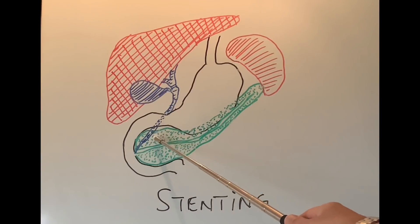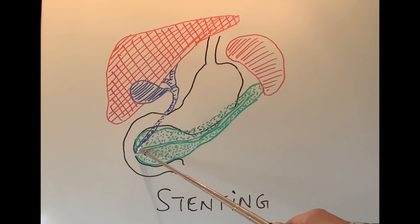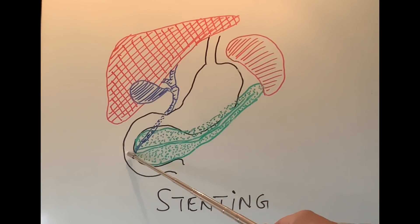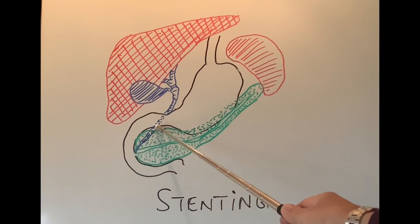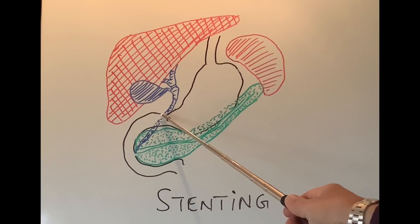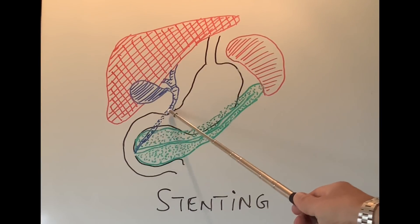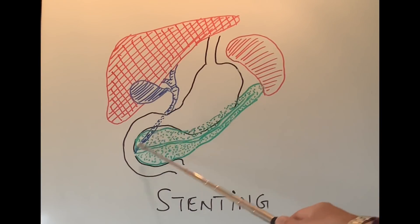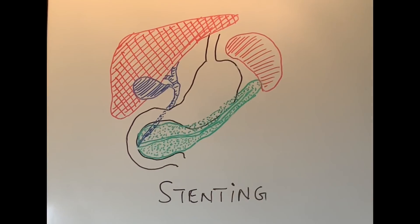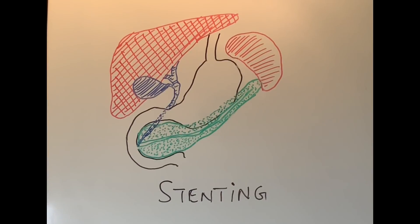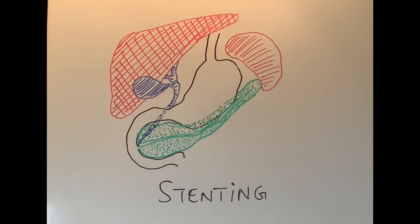If there is a narrowing in the bile duct, the tube is put across this narrowing or blockage and that will help drain the bile duct. The camera test performed to do this stenting is called ERCP, or endoscopic retrograde cholangiopancreatography.